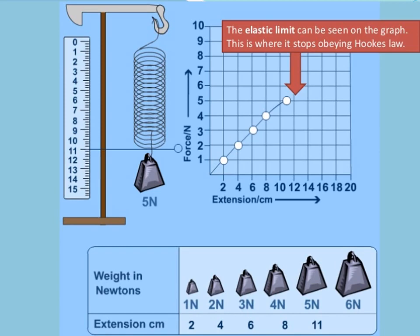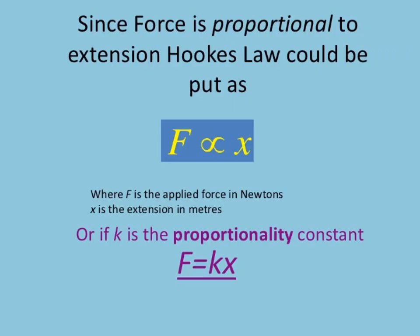The red arrow on the graph represents the elastic limit — the limit within which a body recovers its original shape, size, and length. After crossing this limit, an object is permanently deformed. Since force is proportional to extension x, according to Hooke's law F is directly proportional to x, where F is the applied force in newtons and x is the extension in meters.